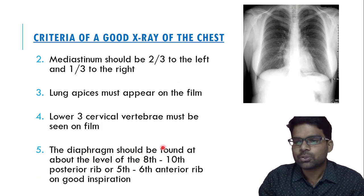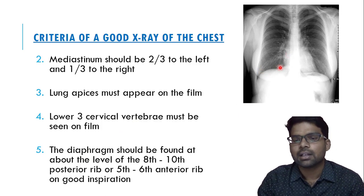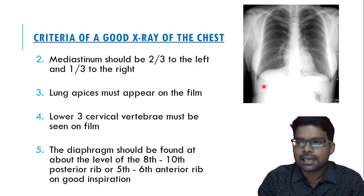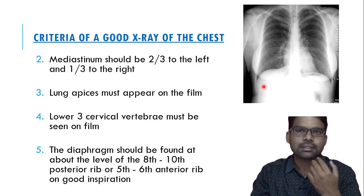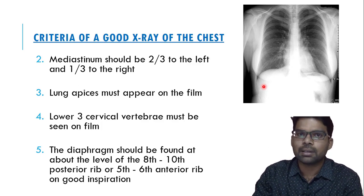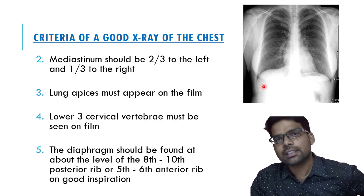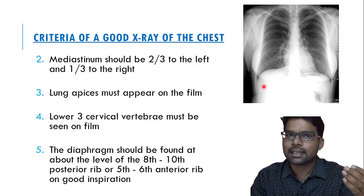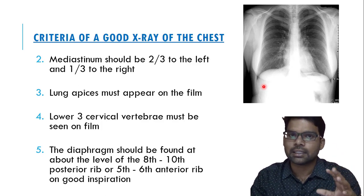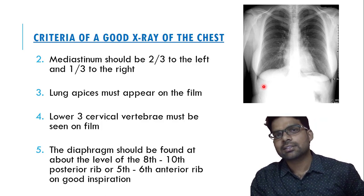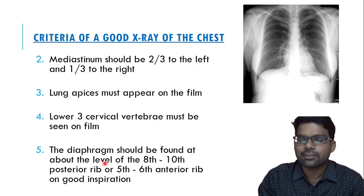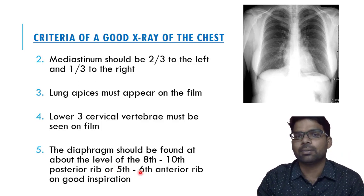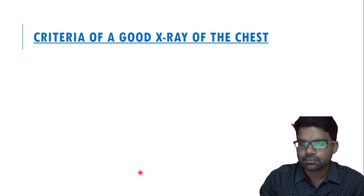The fifth point: the diaphragm should be found at the level of the eighth to tenth posterior rib, or fifth to sixth anterior rib. Anatomically, the lung extends up to the sixth rib anteriorly, up to the eighth rib laterally, and up to the tenth rib posteriorly. So in a normal patient, the diaphragm starts at the sixth intercostal space anteriorly and the tenth intercostal space posteriorly.